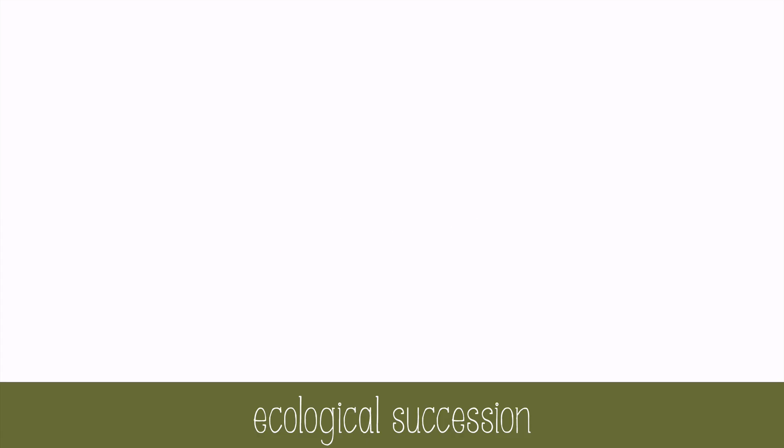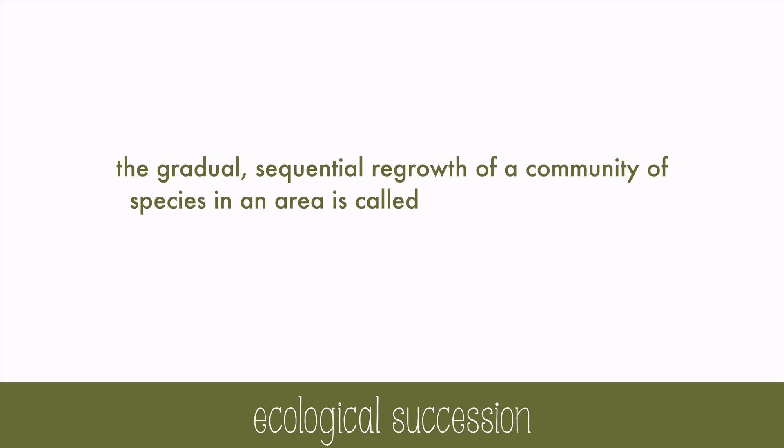Sometimes ecosystems are destroyed by fires, floods, volcanoes, or even human disturbances. But these ecosystems can return. The gradual, sequential regrowth of a community of species in an area is called ecological succession. There are two recognized types of succession: primary and secondary.